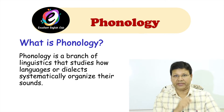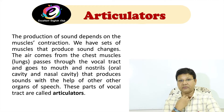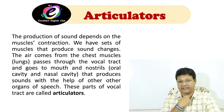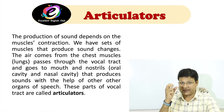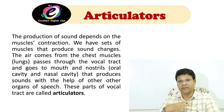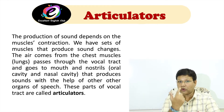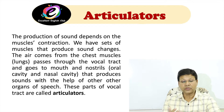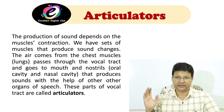Now let's move to today's topic: articulators. The production of sound depends on muscle contraction. We have a set of muscles that produce sound changes. The air comes from the chest muscles — that is the lungs — passes through the vocal tract and goes to the mouth or nose, or the oral cavity and nasal cavity. That produces sounds with the help of other organs of speech. These parts of the vocal tract are called articulators.